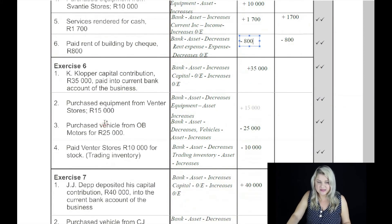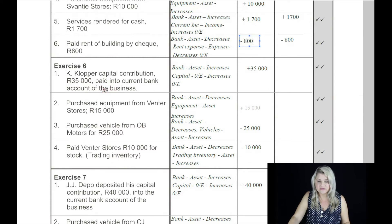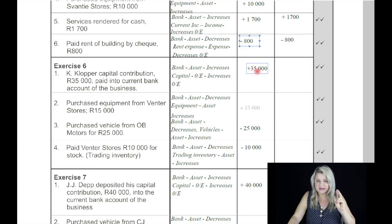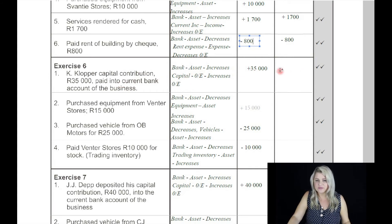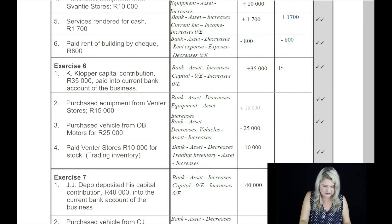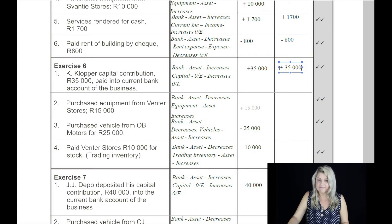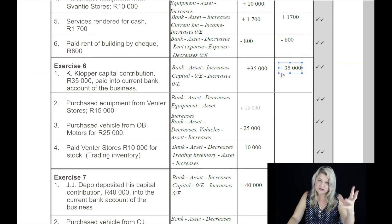Exercise number six. On the first: Kay Clopper's capital contribution was 35,000 Rand paid into the current bank account of the business. The two accounts affected are bank and capital. Bank is going to be increased because the money's being paid into the bank, and a capital contribution will always increase owner's equity when capital is paid.